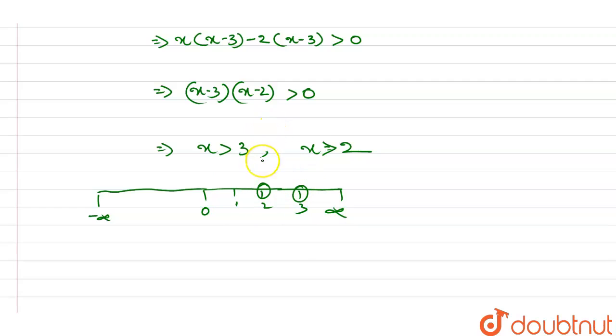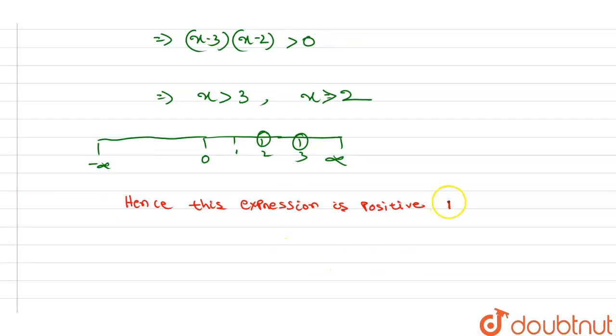The expression is zero, and otherwise is always positive. Then hence, this expression is positive for R minus (2, 3). That is the answer. Thank you.